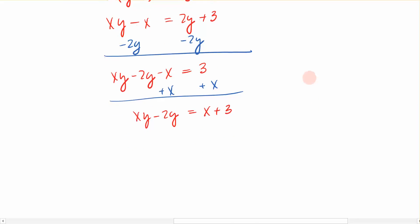So what would you do here? I have two y terms over here on the left, and I'm trying to solve for the variable y. Well, notice that because I have a y variable in the first and in the second term, I can factor out that y, and that leaves me with x minus 2 on the left equals x plus 3 on the right.